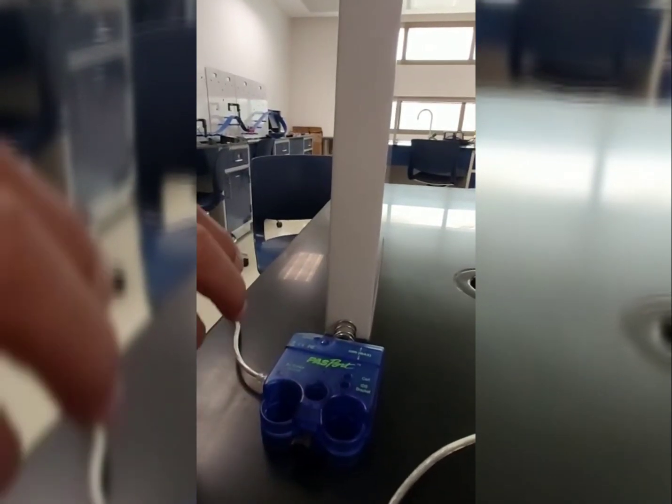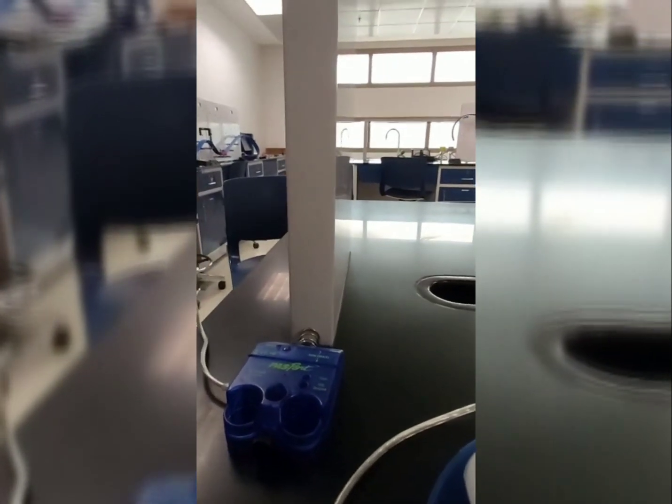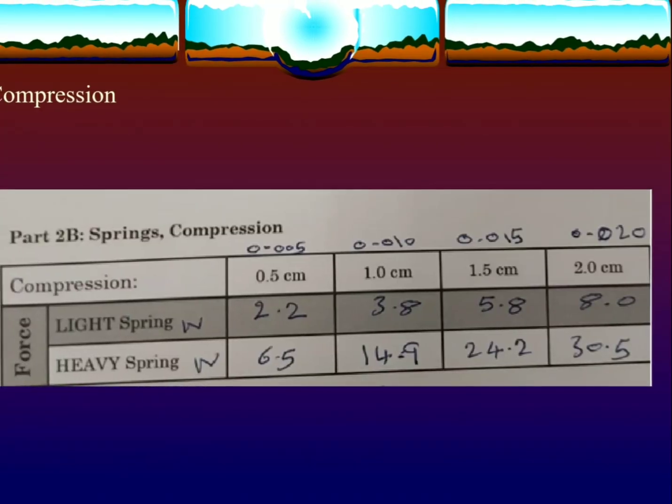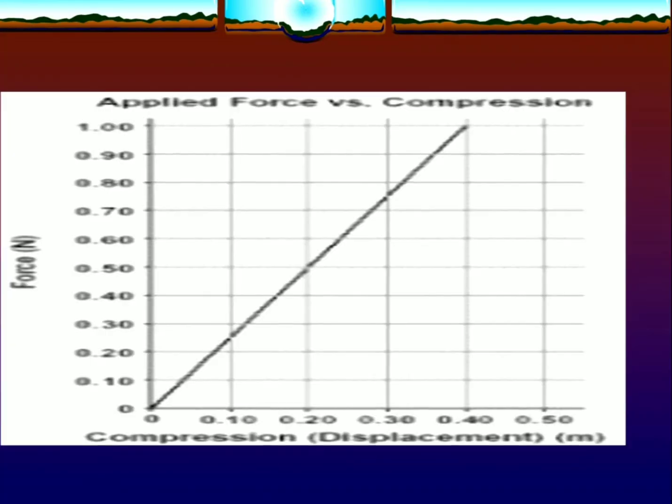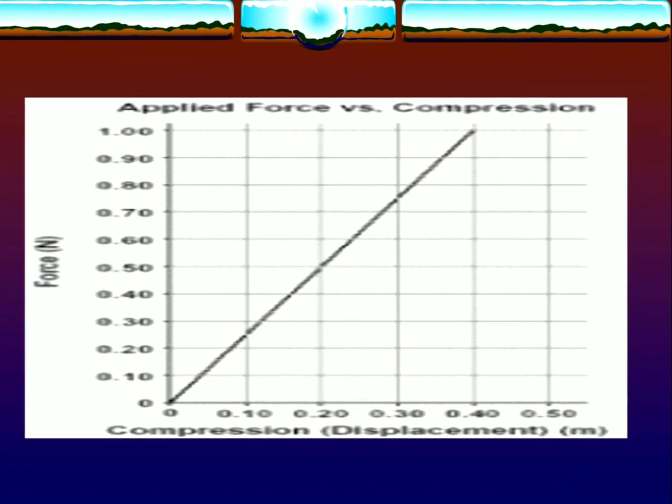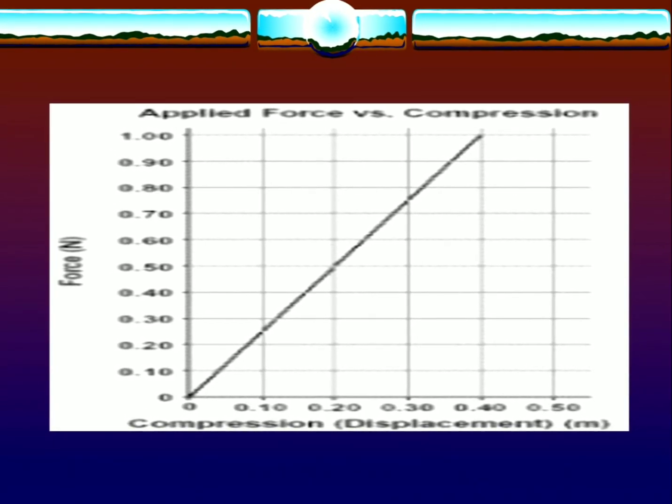In this compression experiment, we have two springs — a light spring and a stronger spring. We will compress both by about 1 cm or 1.5 cm and observe the corresponding force on the counter. Press the button first, then press the spring. With one compression you can see the force. I compress more and the force increases. When done with one spring, remove it and put the other one in and repeat the same procedure — the force will be higher for the stronger spring.